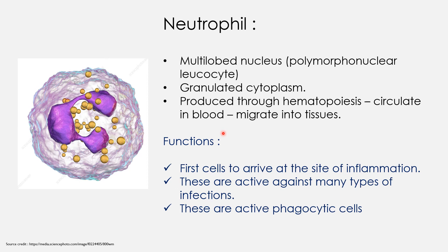The last option is neutrophil. This is also a cell with granulated cytoplasm and a multi-lobed nucleus. It is produced through hematopoiesis and is the first cell to arrive at the site of inflammation. Neutrophil is active against many infections and is also a phagocytic cell. So macrophages and neutrophils are phagocytic cells, while basophils and mast cells are involved in the allergic response.